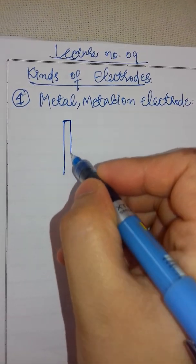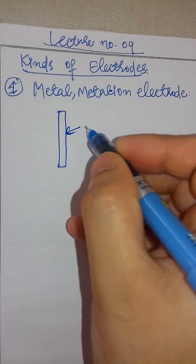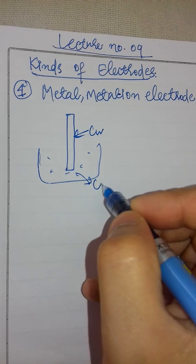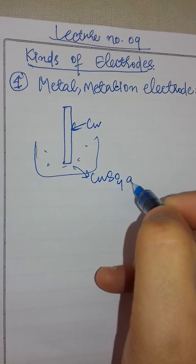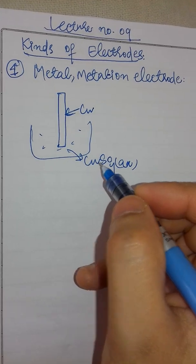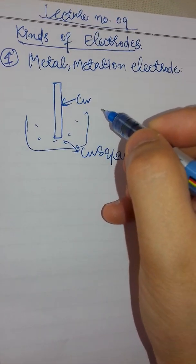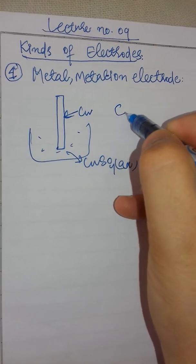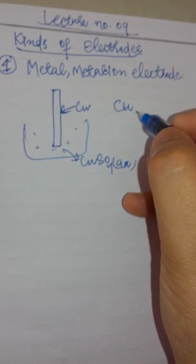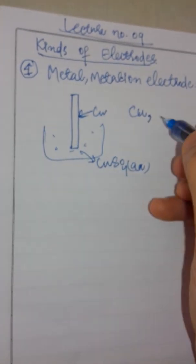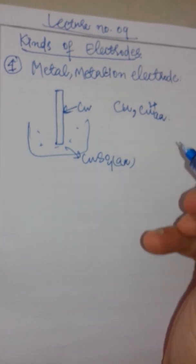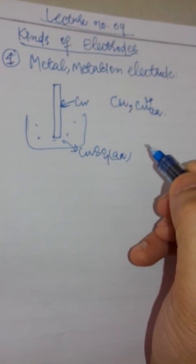You have seen a copper rod dipped in a copper sulfate solution — Cu SO₄ aqueous. This is a metal-metal ion electrode. The schematic representation of this kind of electrode: first the rod part, that is copper, then a comma, then the electrolyte part — in it we have Cu²⁺ aqueous ions. This is the schematic representation of this kind of electrode.